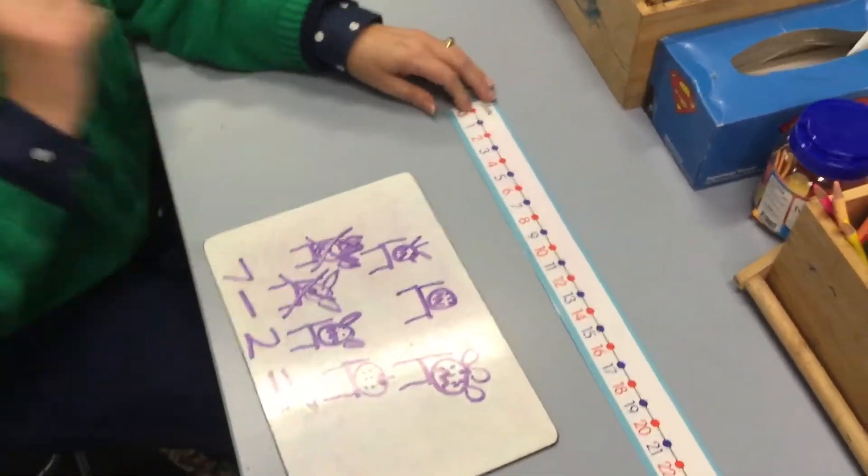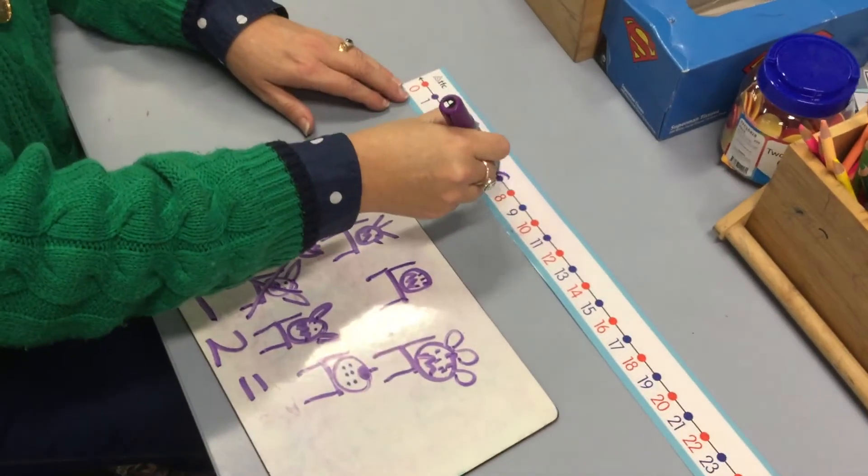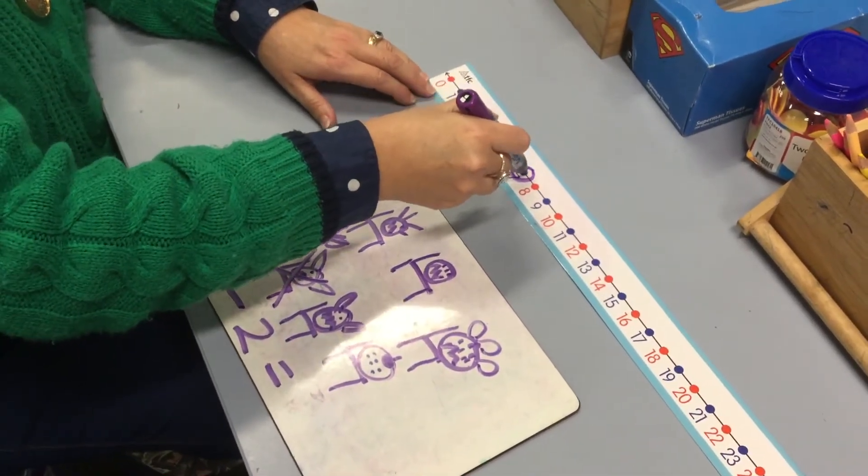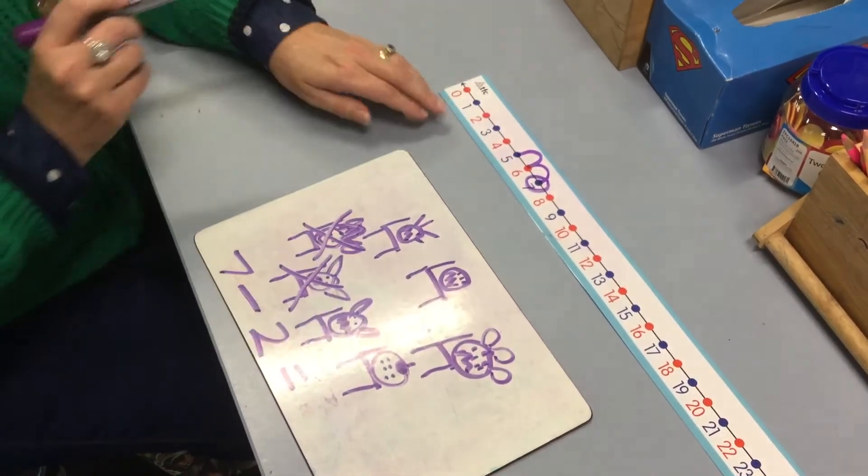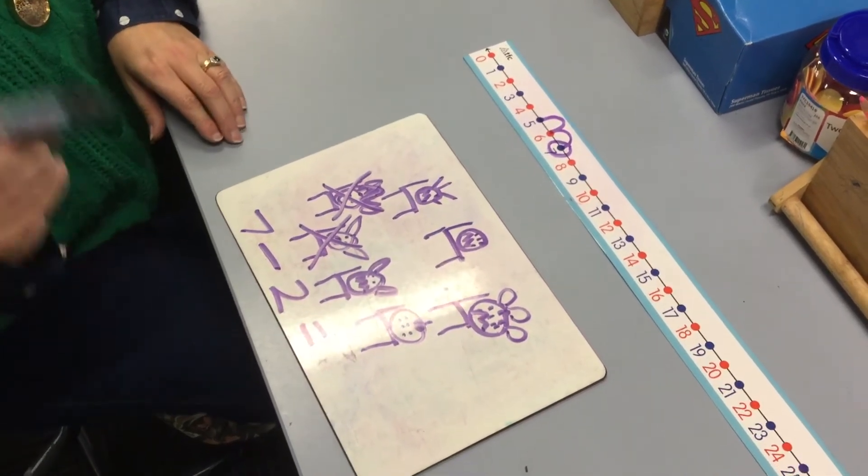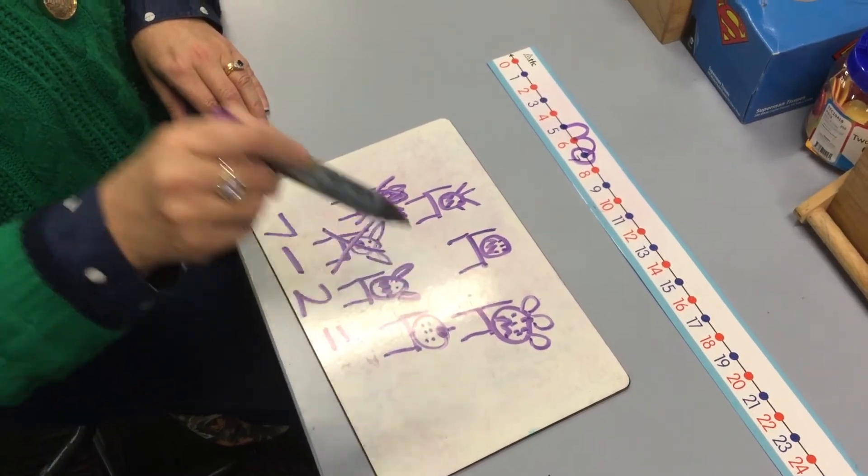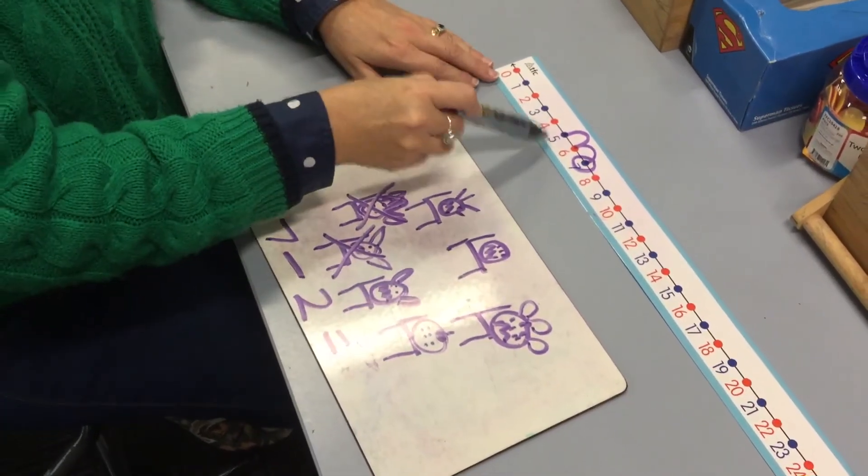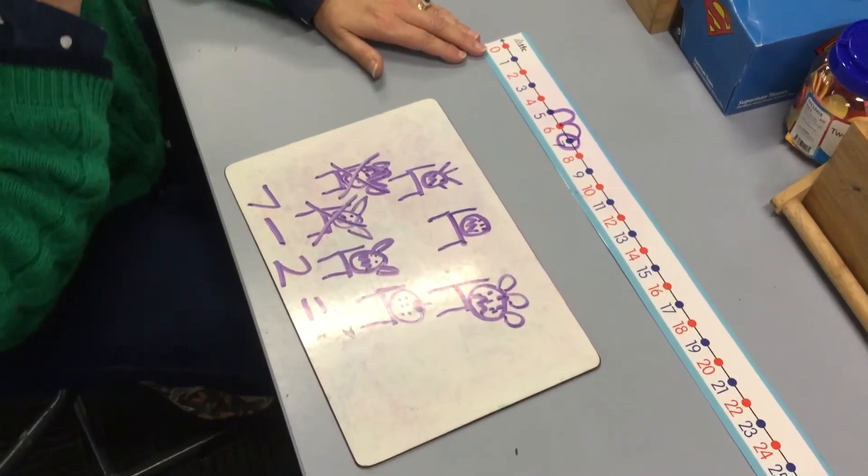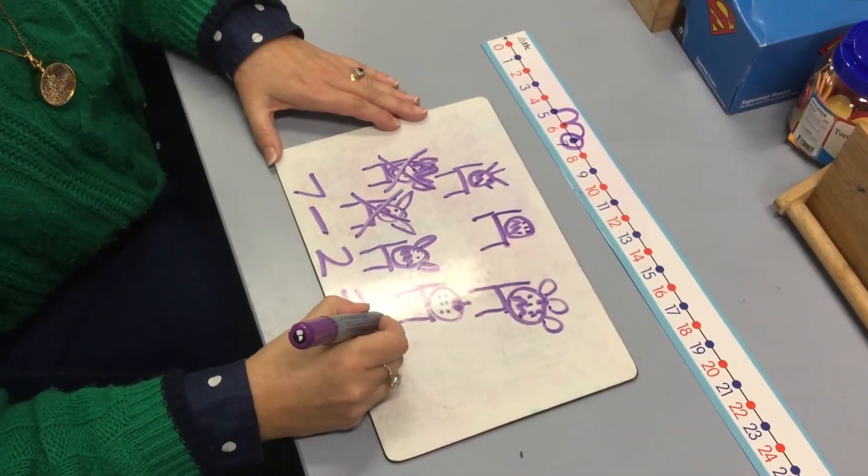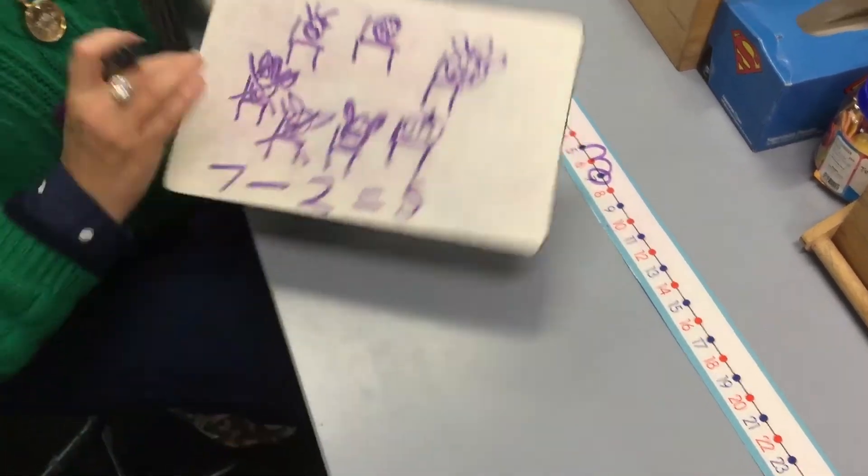And let's use this to see if we've got it. So we're at seven. We're going to take away two. So we go one, two. What did we land on? It is fantastic. So there we go. That's our first one.